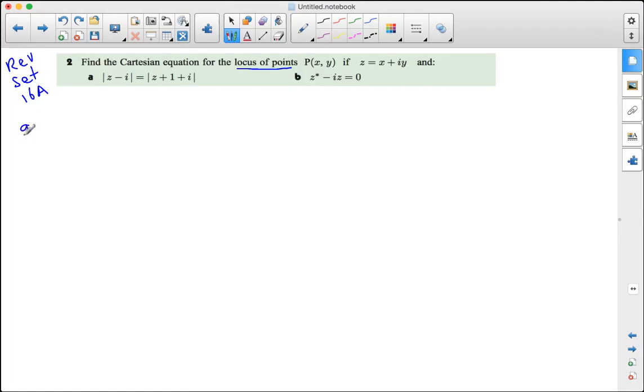Now for part a, we just basically do as it says, so |z - i| equals |z + 1 + i|, and z is x + iy.